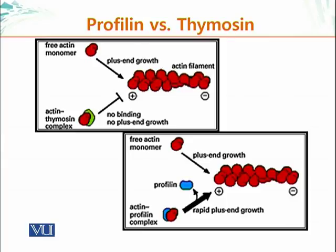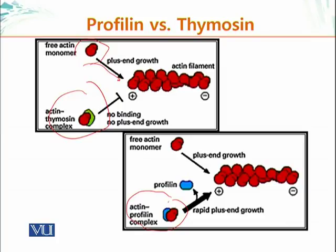Here is the mechanism in graphic form. A free actin monomer can be added on to the plus end, but it cannot if it is bound to a thymosin complex. You produce a lot of actin monomers but sequester them using thymosin. If you need to polymerize actin, you activate profilin, which takes monomers out of the thymosin-bound pool. Monomers attached to profilin can then be added on to the growing plus ends of actin filaments.